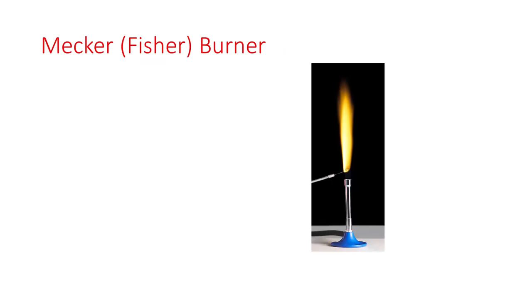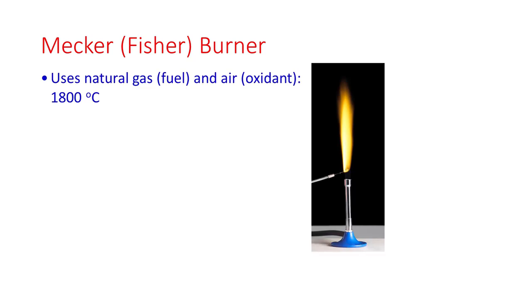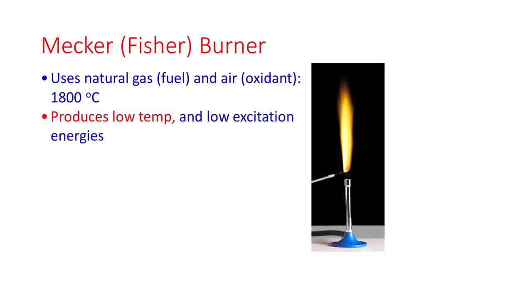The Maker or Fischer burner is used in the laboratory. It uses natural gas as fuel and air as oxidant. The temperature is 1800 degrees centigrade. It produces low temperature and low excitation energies. It is used for alkali metals and for qualitative purposes.